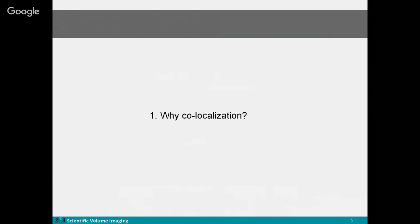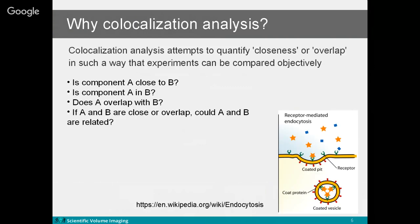Why do we need co-localization and what does the result tell us? Co-localization analysis can provide information about whether two objects are related — for example, whether a protein is related to another molecule, or whether component A is close to component B, whether they coexist or overlap, and if so, whether A and B are related.